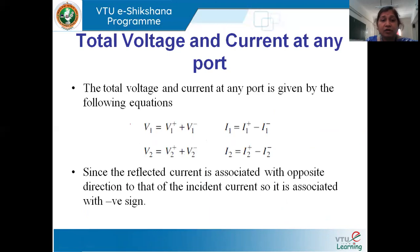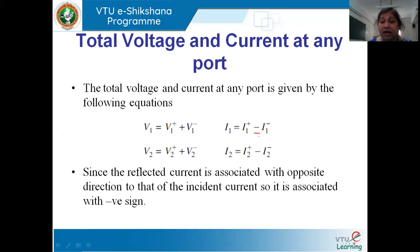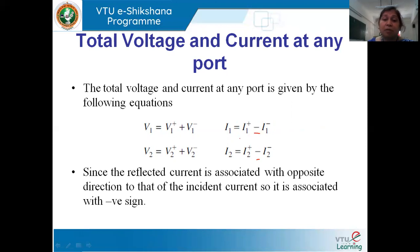The reflected wave amplitude B1 equals V1⁻ / √Z₀, which equals (V1 − V1⁺) / √Z₀. We can find all incident and reflected wave amplitudes at any port in terms of incident and reflected voltages. The total voltage is the incident voltage plus the reflected voltage. When writing the current equation, a negative sign appears because the incident current and reflected current at any port flow in opposite directions.